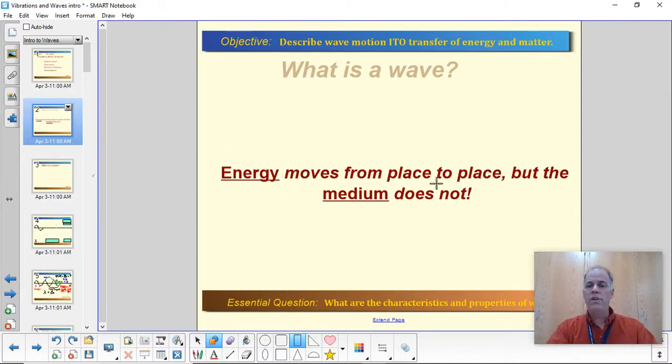So with a wave, energy moves from place to place, but the medium does not. Now, what is a medium? That's our first vocabulary word. The medium is the material that carries the wave. So I just talked about a rope. If a wave is traveling down a rope, well, the wave is the wave, but the rope is the medium. Because if there's no rope, there's no wave in the rope.